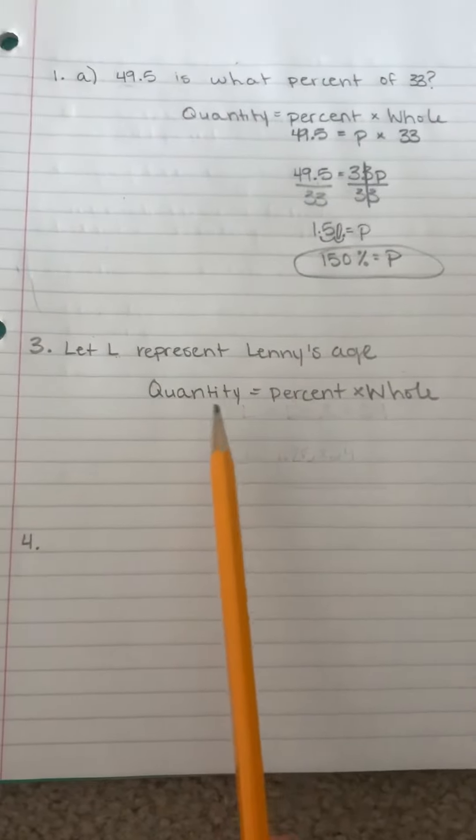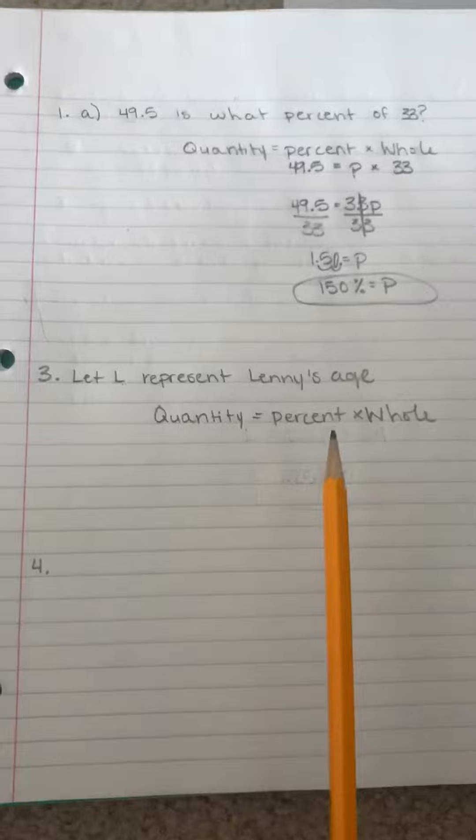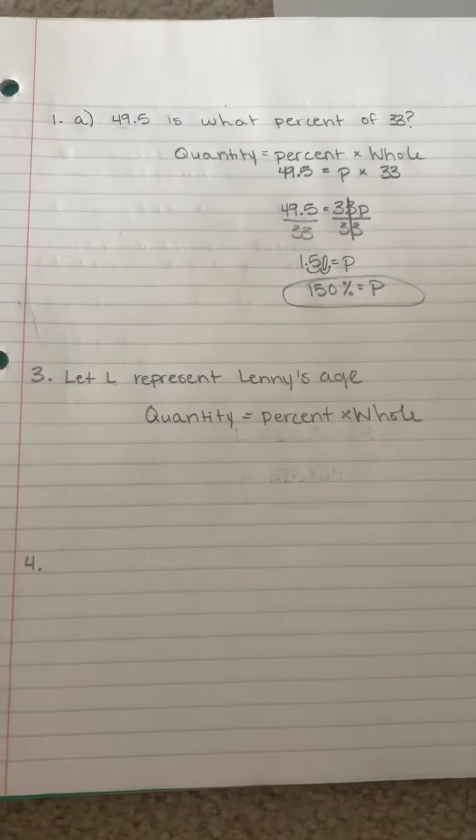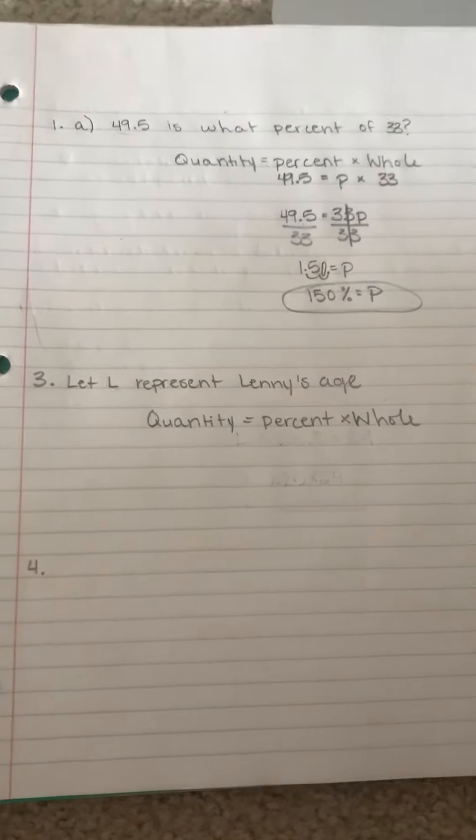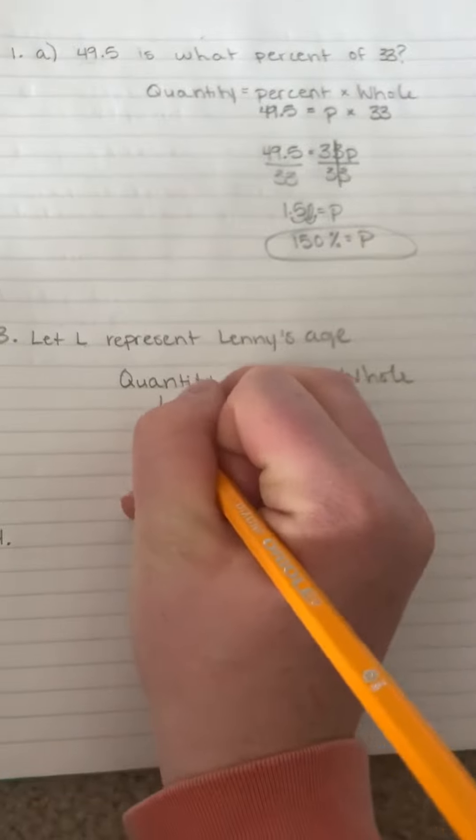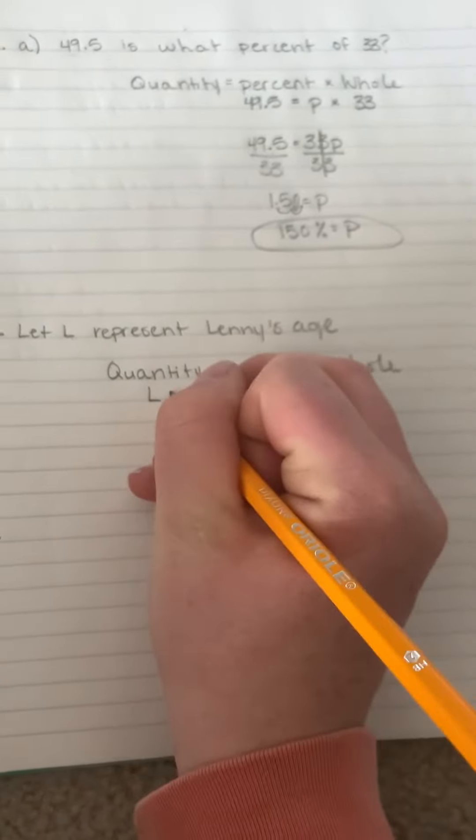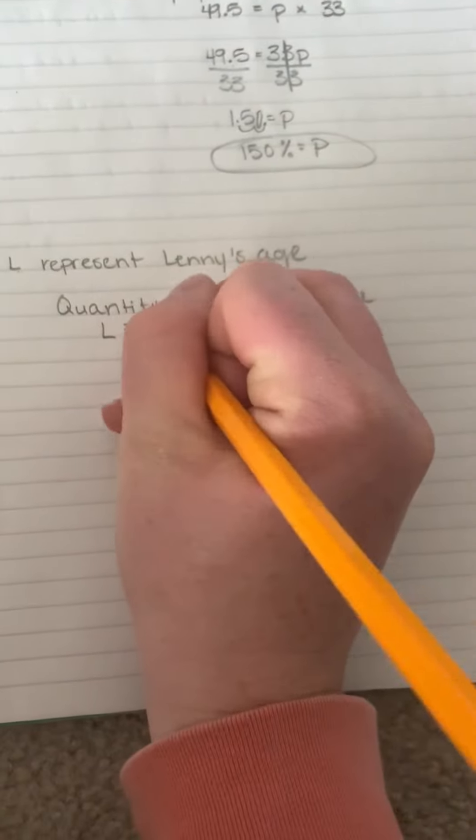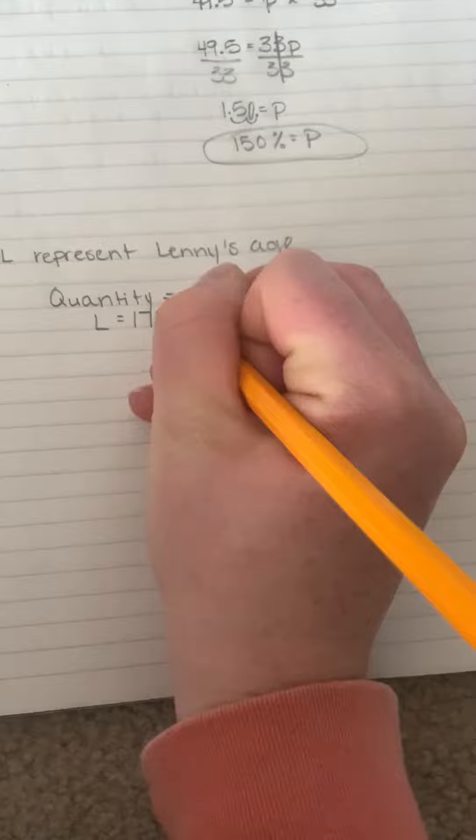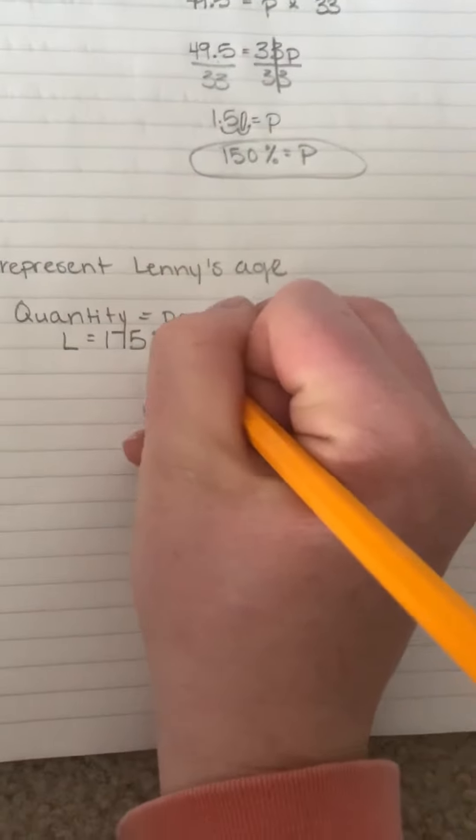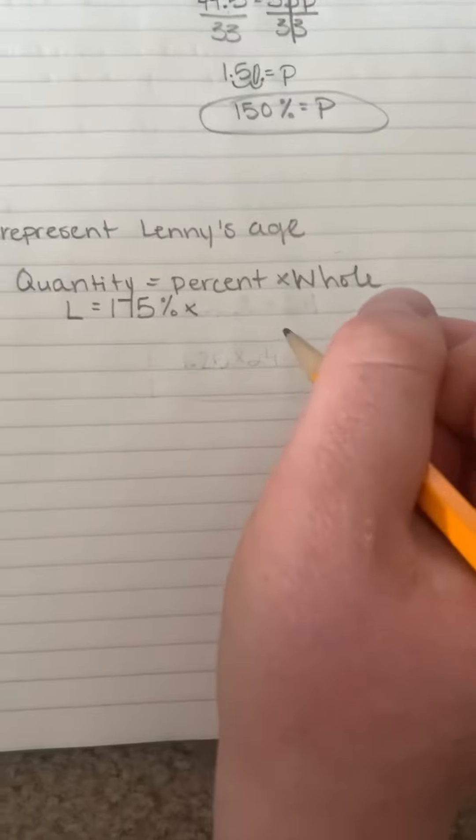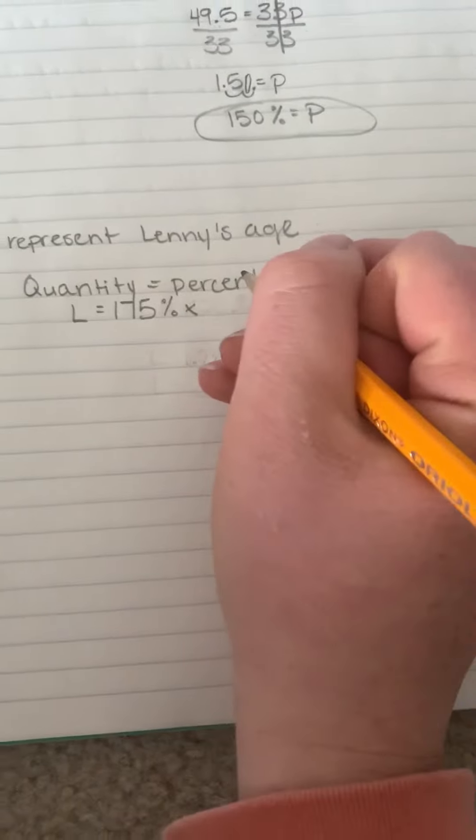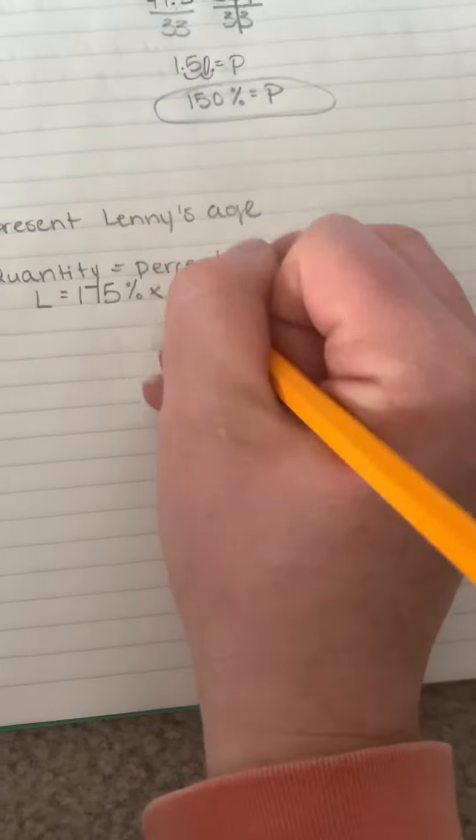And I'm going to use the same equation that I used up here: Quantity equals percent times whole. And Lenny's age is going to be my quantity. My percent is 175%, that's what they gave me above in the problem. And then my whole is going to be Benny's age, and Benny's age is 12.